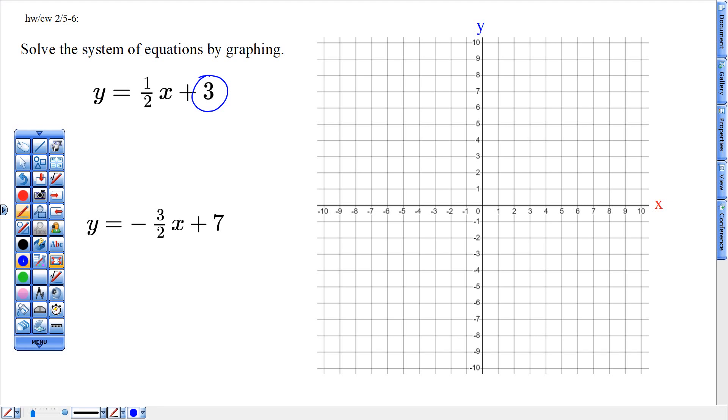So this guy, starting at three on this y-axis, put my first dot right there, and then looking at this number in front of x, which is my rate of change number. If it's written as a fraction, use that fraction to tell you how many boxes from that dot three you're going to the right, and then up to get your next point.